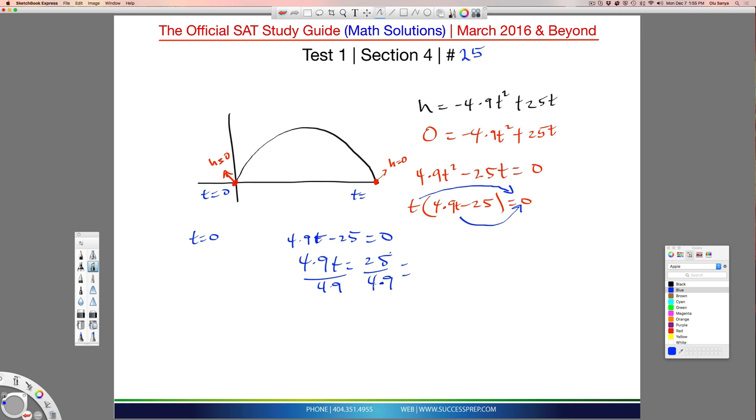So when I look at this, I see 4.9, that's about 5 approximately. And this is 25 up top, so 25 divided by 5 is 5. So at 5 seconds later, after you throw this ball in the air, it will hit the ground again.